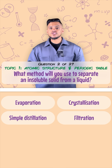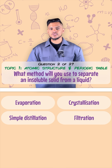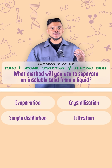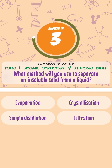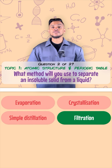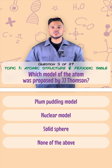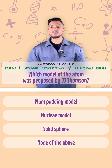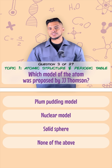What method would you use to separate an insoluble solid from a liquid? You'd use filtration. Which model of the atom was proposed by J.J. Thomson?